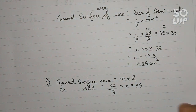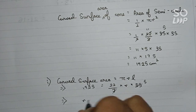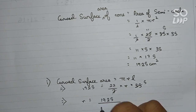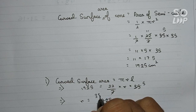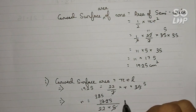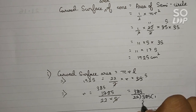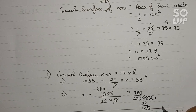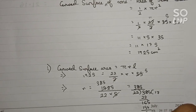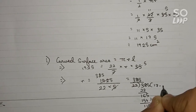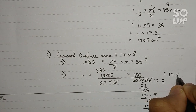Solving for r: 7 and 35 cancel to give 5, so the equation becomes r = 1925 ÷ (22 × 5). Cutting by 5 gives 385 ÷ 22. Dividing: 22 goes into 385 once with remainder 165, then 7 times giving 154 with remainder 11. Bringing down a zero gives 0.5, so r = 17.5 cm.